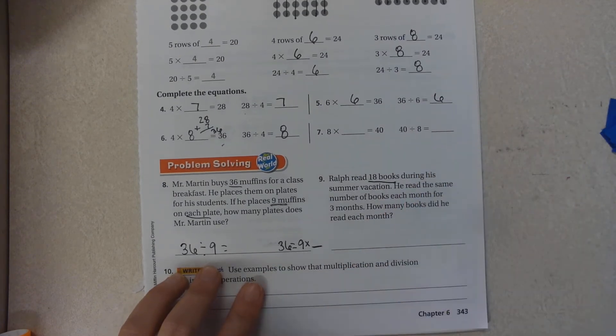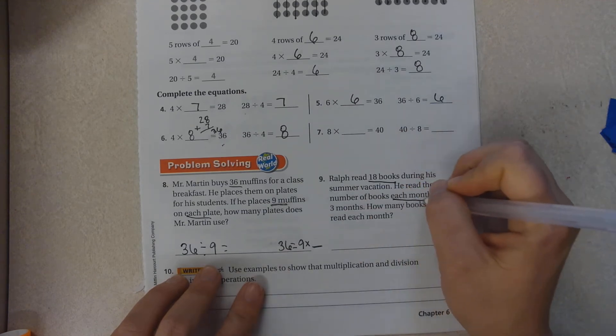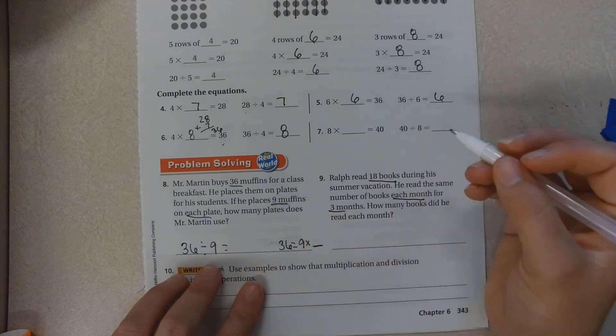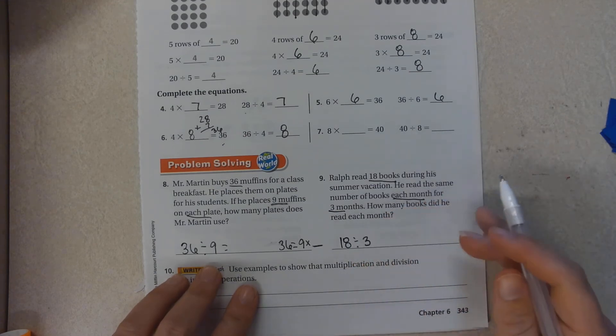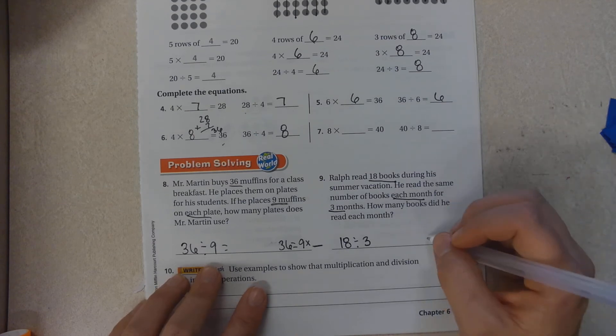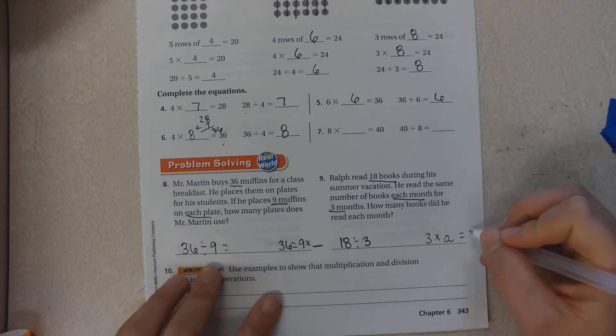There's 18 books. He read the same number of books each month for 3 months. So he has 18, it's divisible by 3, or 3 times something equals 18.